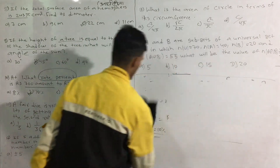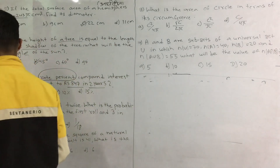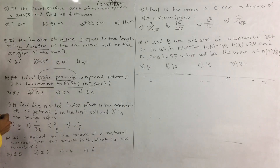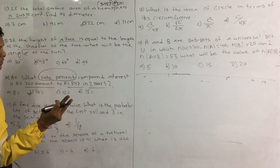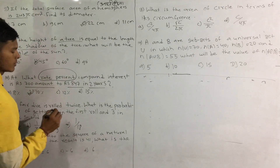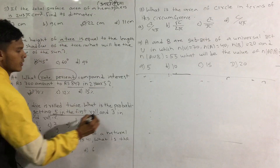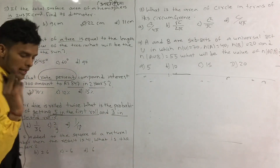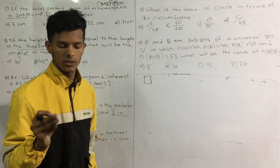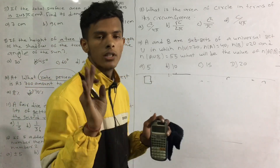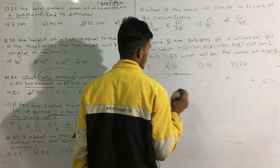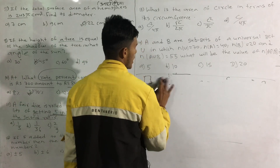Now we have to see the probability of this. If you have a probability problem, you will roll the dice and the dice are independent. What is the probability of getting 5 in the first roll and 3 in the second roll? We have to roll the dice.